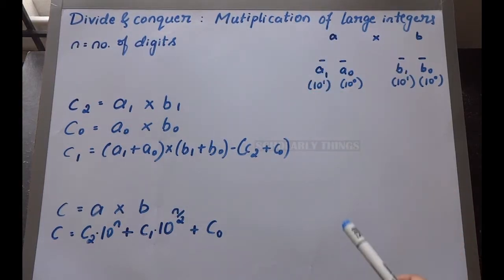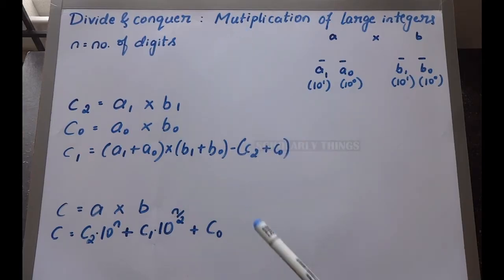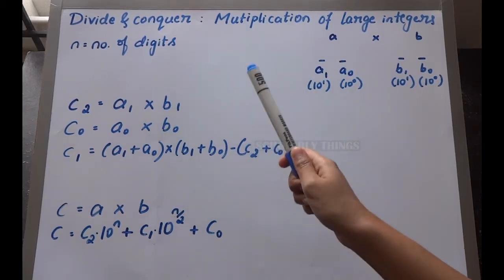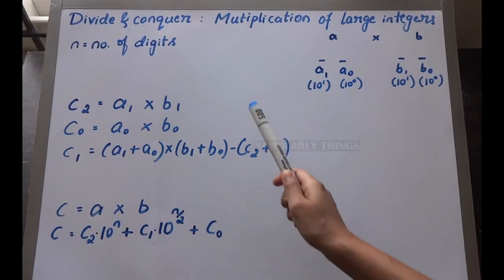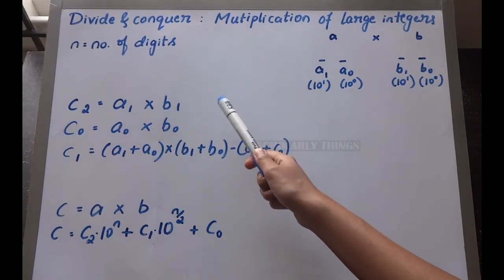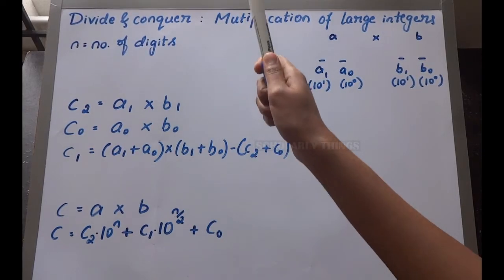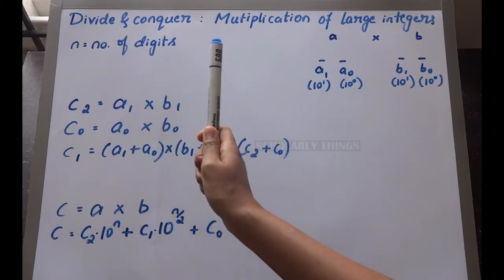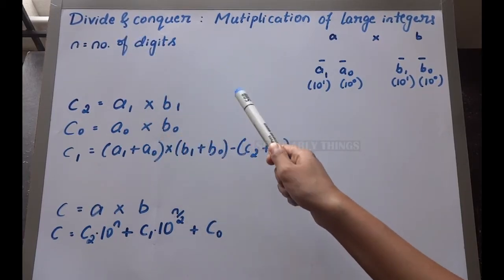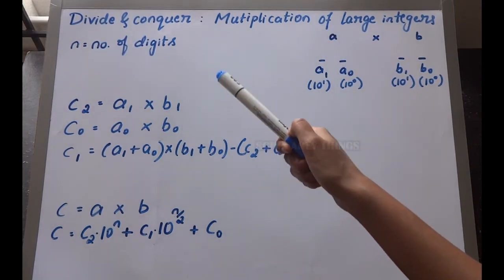Multiplication of large integers. The idea of using divide and conquer here is to reduce the number of multiplications involved in the conventional method. If we have to multiply two numbers with n digits, we multiply each digit of one number with each digit of the second number, so there will be n² multiplications involved. We need to reduce those multiplications.